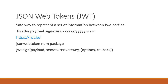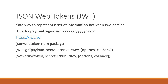So JWT.sign is the method to generate a JSON Web Token. The token is then sent as a response to the frontend, and the same token is sent back to the server with every subsequent request. And to verify the token sent back from the frontend, we use the verify method, passing in the token itself along with the same secret key that was used to sign, and any options again if required. So JWT.verify is used to verify the token in the backend.